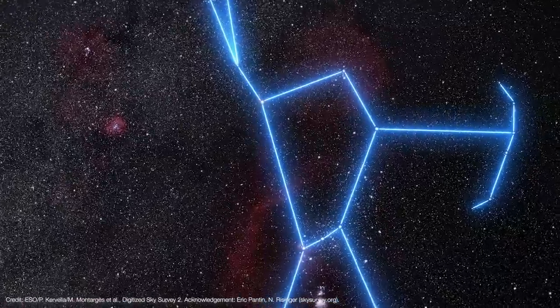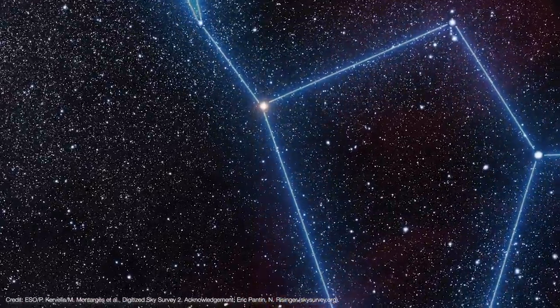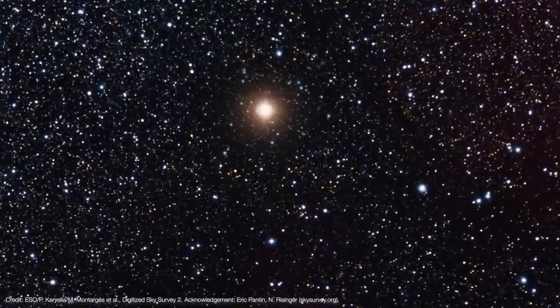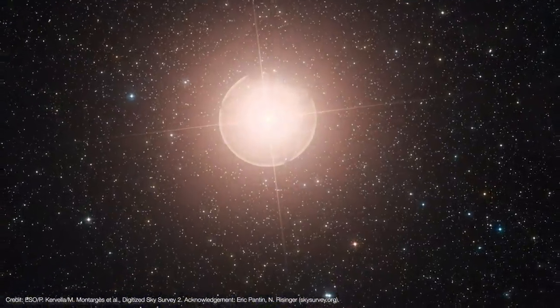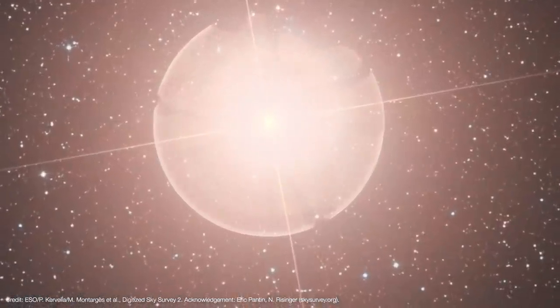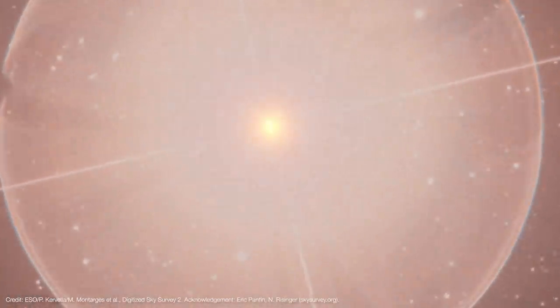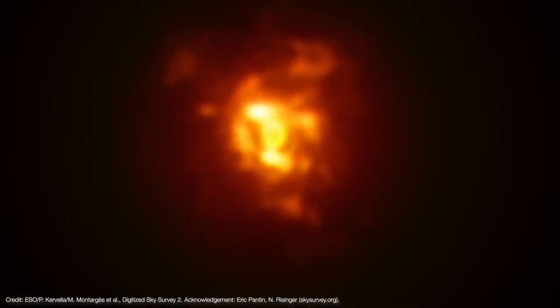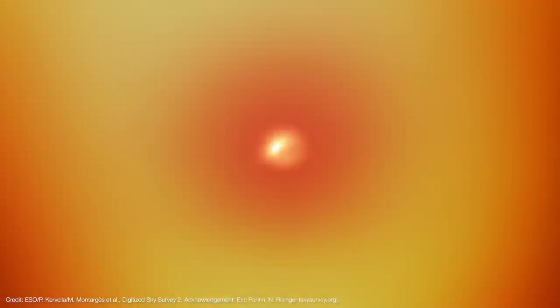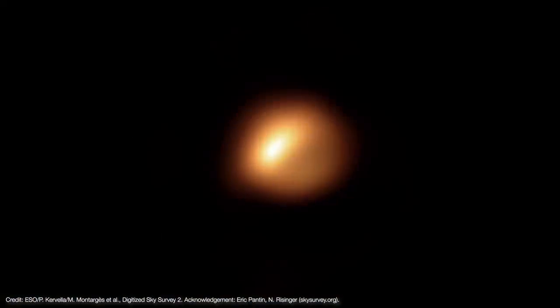Betelgeuse has been dramatically dimming since September of 2019. At first, astronomers thought it would eventually return to normal brightness, but that hasn't happened yet. Instead, it's become even more faint. As of February 2020, Betelgeuse is just 38% of its normal brightness. And if that weren't weird enough, new images from ESO's Very Large Telescope show the star as it has never appeared before.